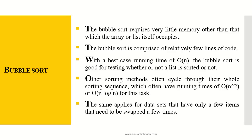Bubble sort requires very little memory other than what the array or list itself occupies, and will be used to sort elements in an array. It is comprised of relatively few lines of code. Bubble sort is good for testing whether or not a list is sorted, and it is good for small numbers of elements in an array.